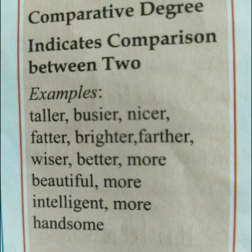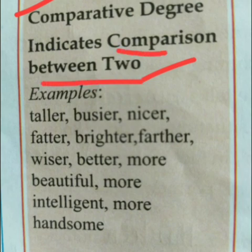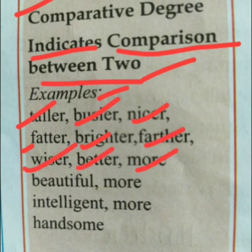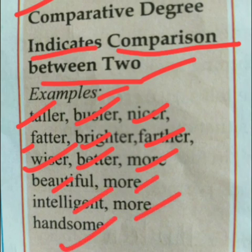Comparative degree indicates comparison between two. Comparative degree दो लोगों के बीच में comparison के लिए use किया जाता है। Examples: taller, busier, nicer, fatter, brighter, farther, wiser, better, more beautiful, more intelligent, and more handsome. All of these are comparative degree।